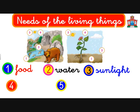Another need is sunlight. Do you see the sun over here and the sun over there? Yes, plants, animals, and people — we need the sun. Plants cannot produce food without sunlight, so no plants without sunlight.